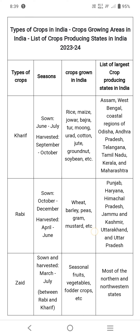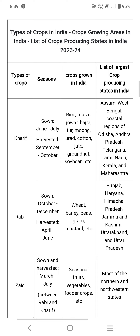The list of largest Kharif crop producing states in India includes West Bengal, coastal regions of Odisha, Andhra Pradesh, Telangana, Tamil Nadu, Kerala, and Maharashtra.